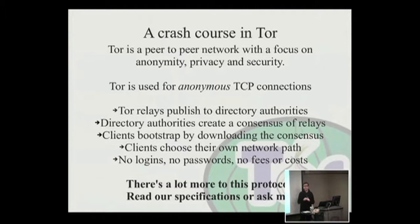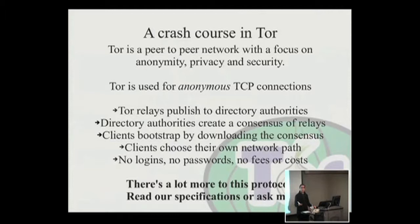The directory authority receives this information along with all the other directory authorities. They have a little powwow and say, I can reach this server, this is what I've observed. After about an hour or two, all the servers seen in common between a simple majority of those directory authorities get put into what we call the consensus — a snapshot of what the network looks like at that time. The directory authorities assign certain flags: for example, if you allow people to leave your exit node, those servers get assigned the exit flag. Clients make all routing decisions based on the consensus.